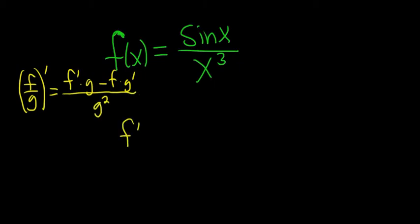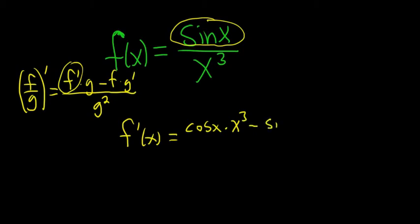So f prime of x, it's the derivative of the top piece, the derivative of this, which is cosine, times the bottom minus the top times the derivative of the bottom piece. So 3x squared, that's the power rule. All over the bottom one squared. So when you square x cubed, you get x to the sixth.